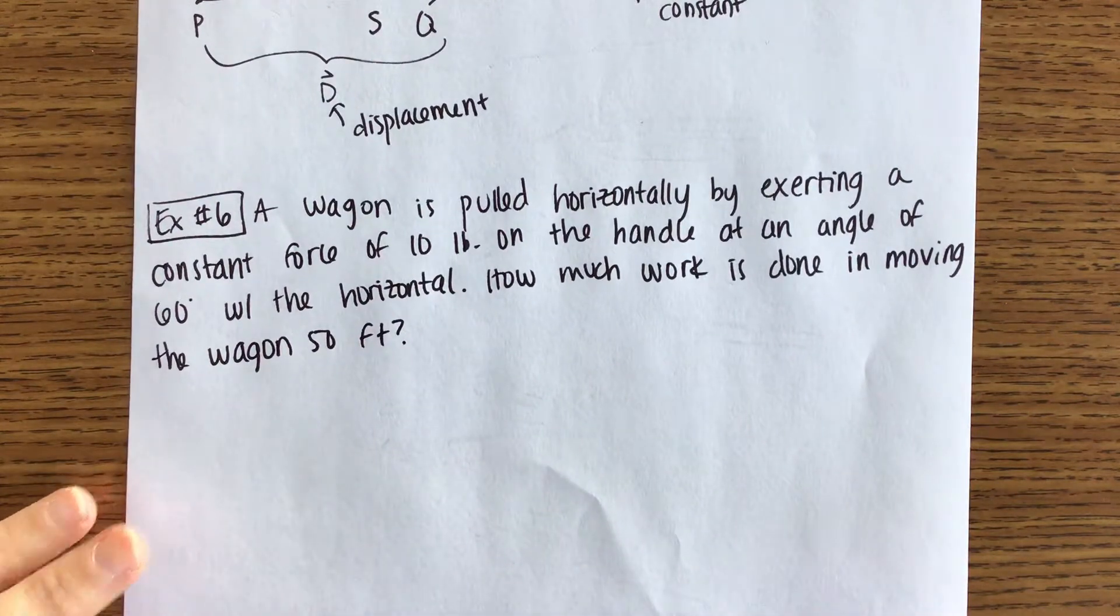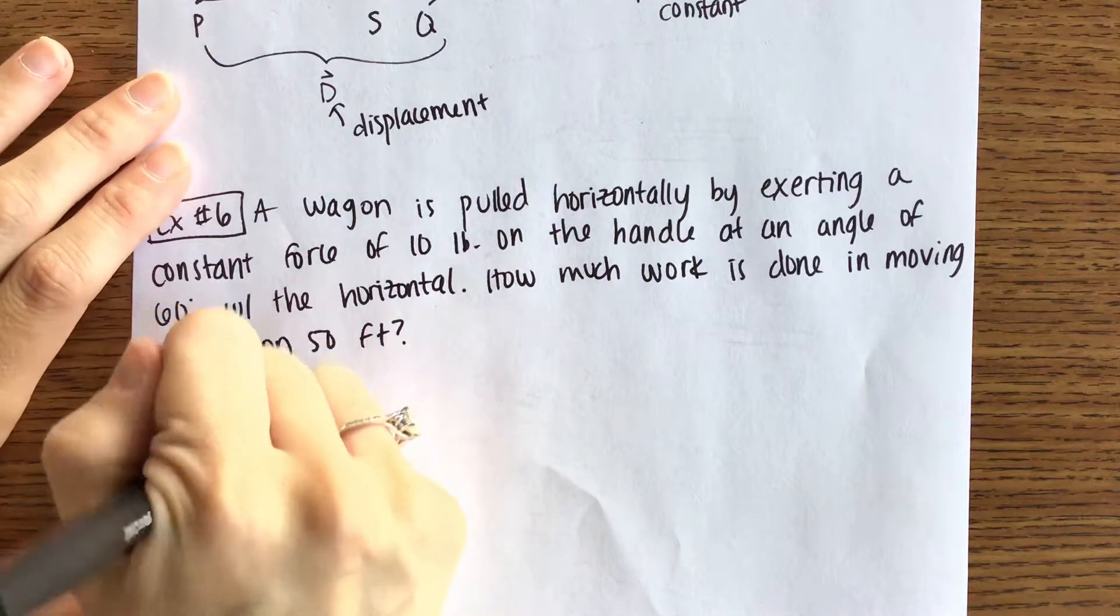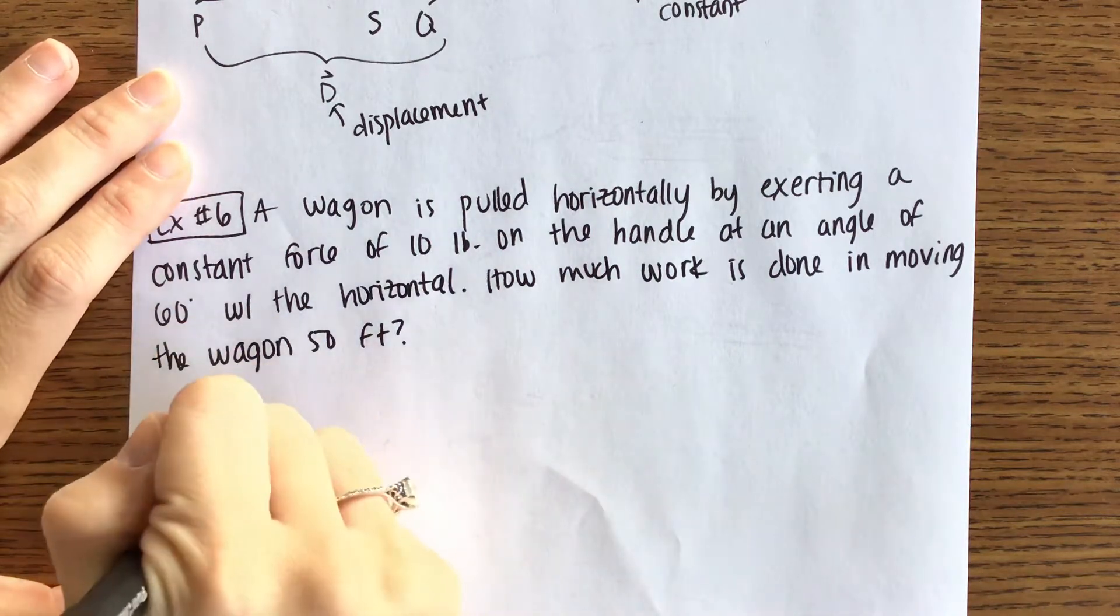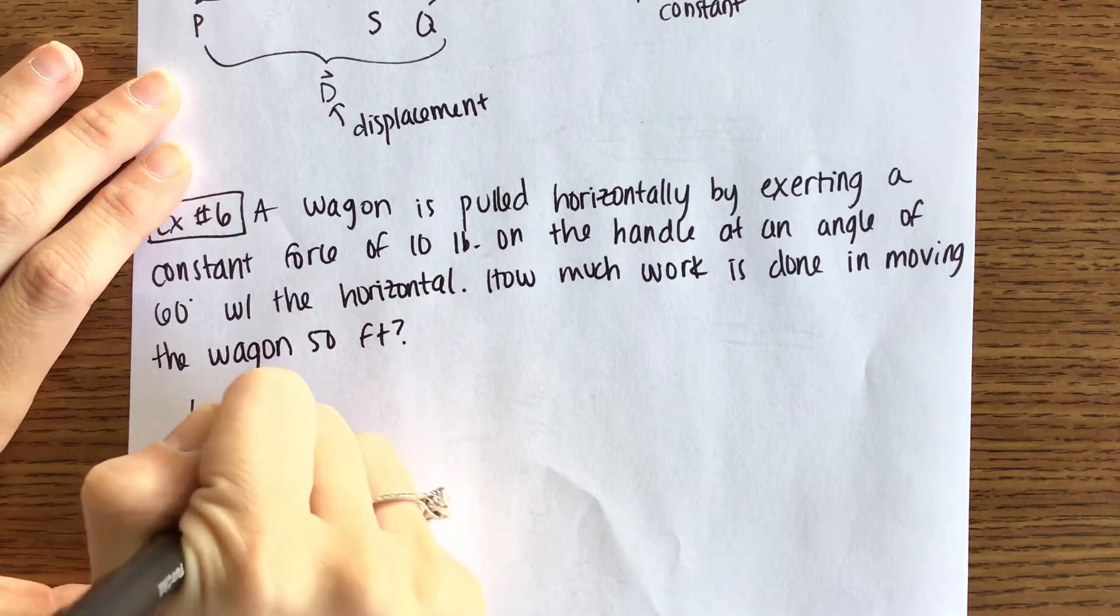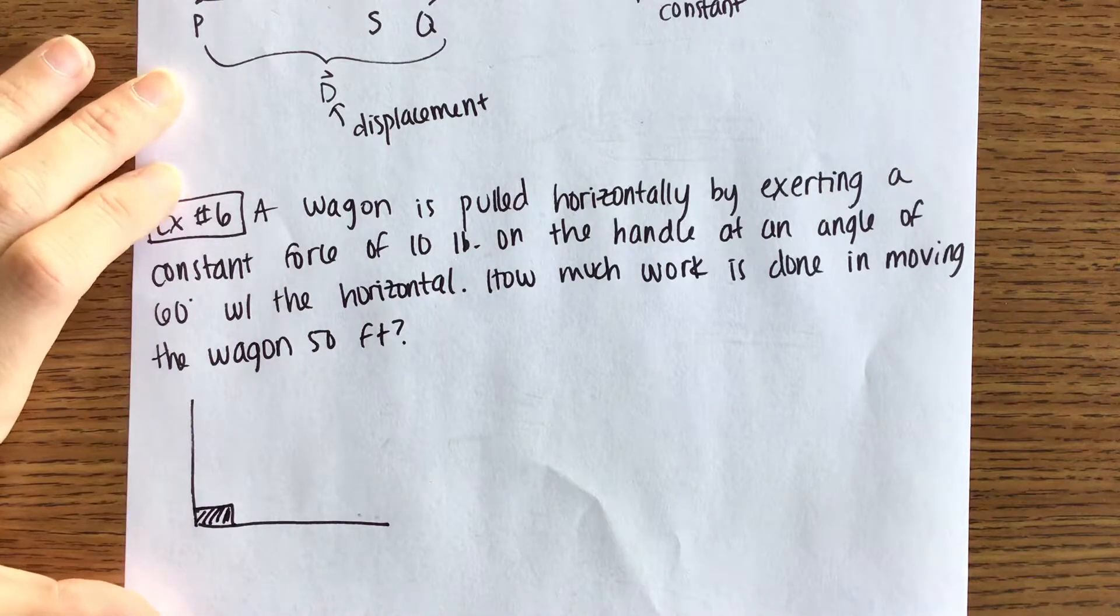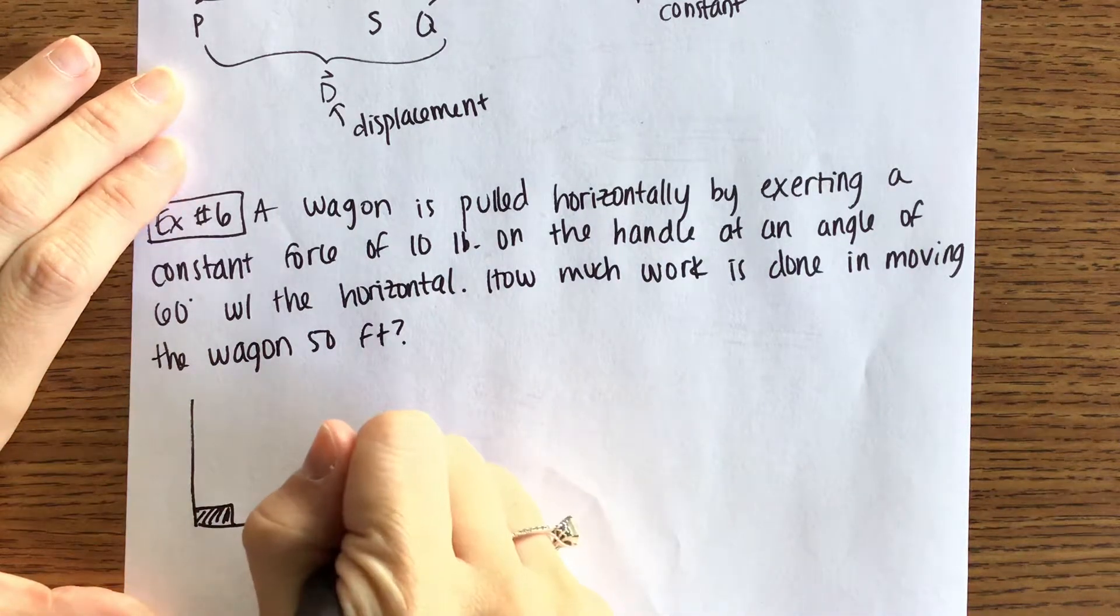And there is a visual that I'm going to draw for you. Let's say we have our wagon here. We want to move the wagon 50 feet along the horizontal.